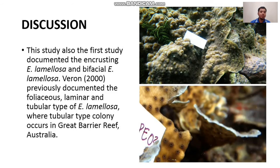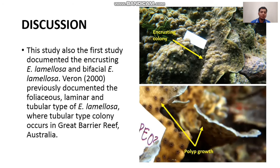This study is also the first to document the encrusting Echinopora lamillosa and the bifacial type. Ferron previously documented the foliose, laminar, and tubular types of Echinopora lamillosa, where the tubular type colony occurs in the Great Barrier Reef, Australia. Here we found an encrusting Echinopora lamillosa, as shown in the picture.